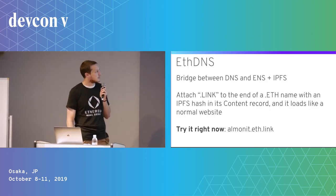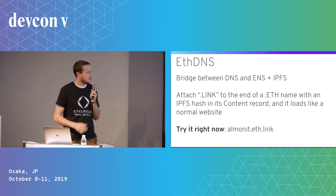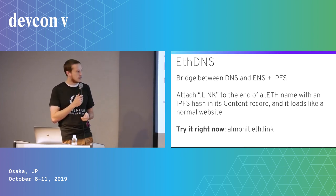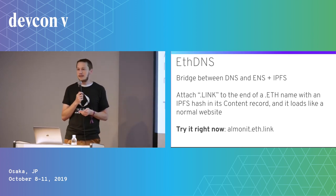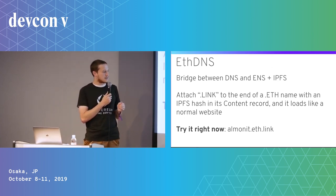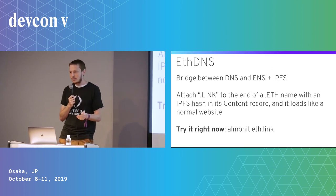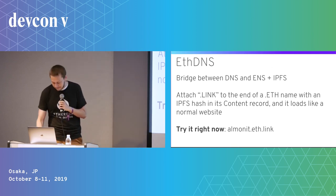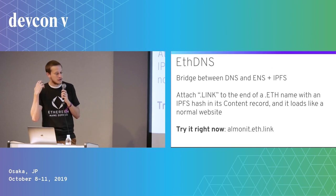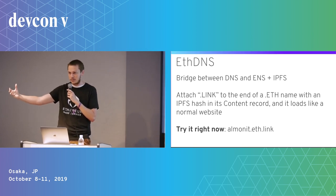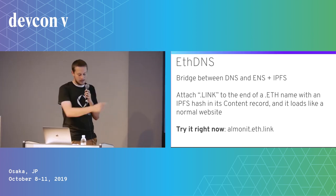We also have a project called ethDNS, which is a bridge between DNS and ENS plus IPFS. We own eth.link on DNS, and we've set up a special server there so that if there is a decentralized website and you don't have MetaMask or aren't using Opera, you can still access it — just add .link to the end of the ENS name and it will resolve like a normal website.